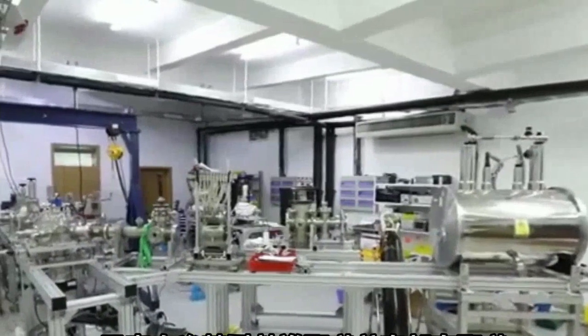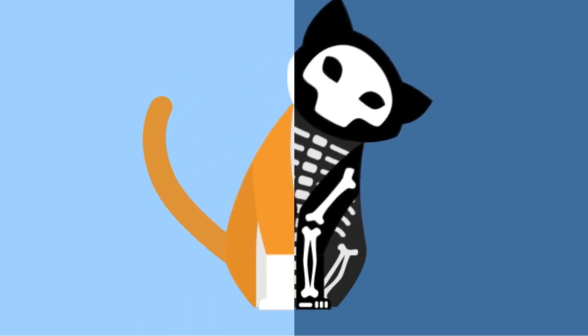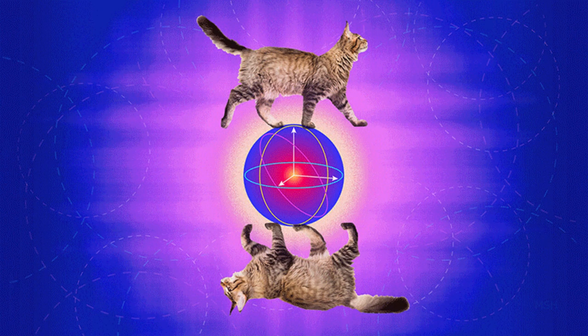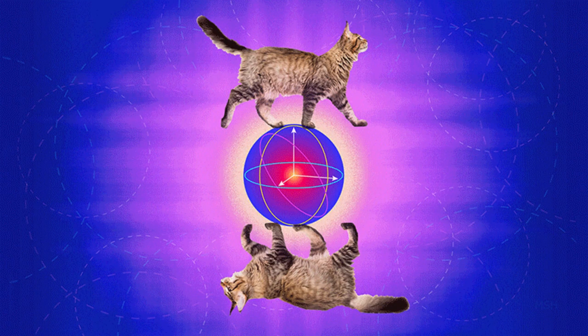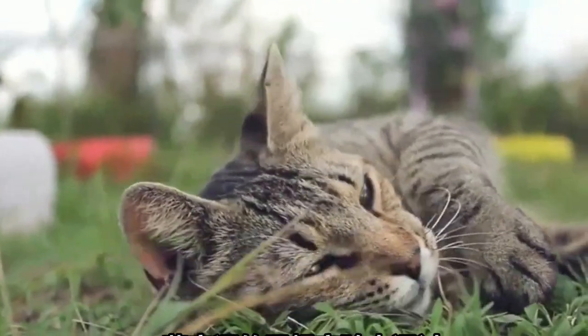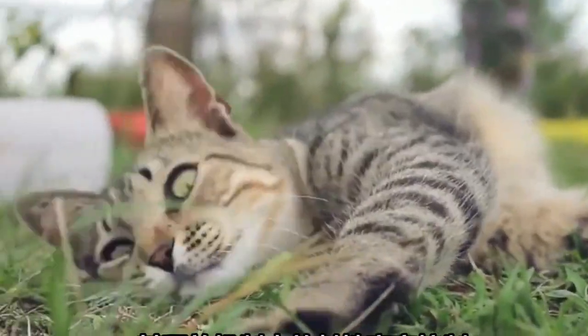In Schrödinger's thought experiment, the cat is placed in an opaque box with a poison vial, whose release mechanism is controlled by radioactive decay. According to the rules of quantum mechanics, until the box is opened and the cat is observed, the cat should exist in a superposition of states, simultaneously dead and alive.